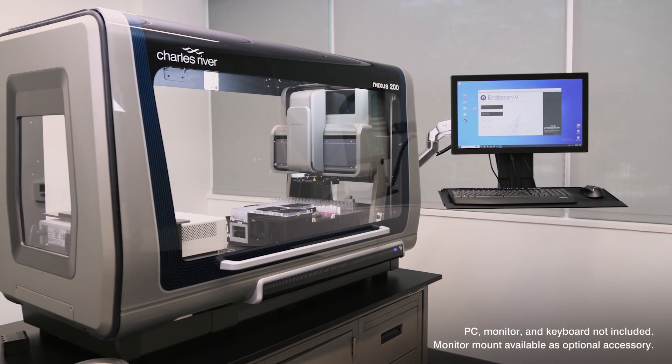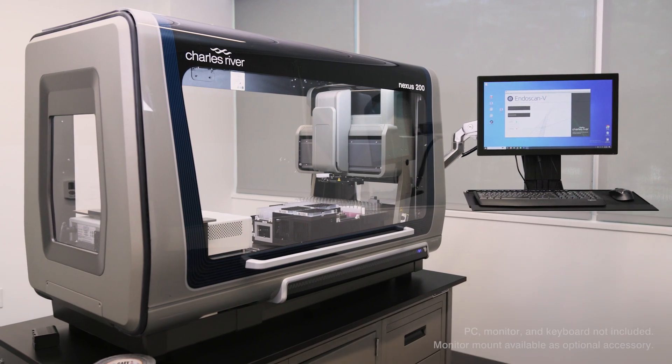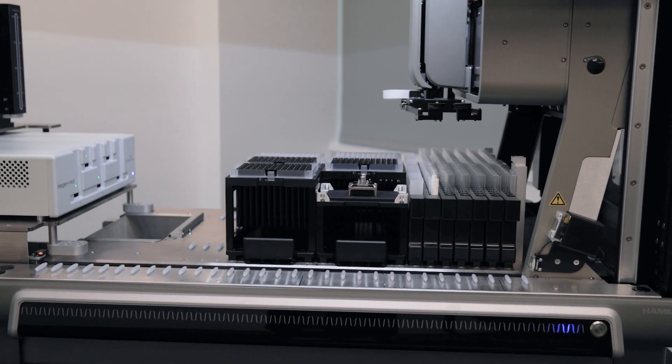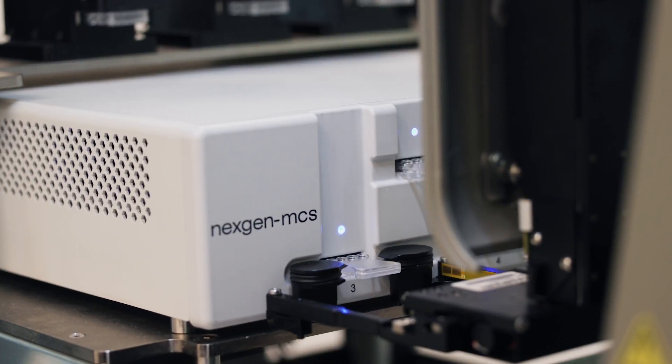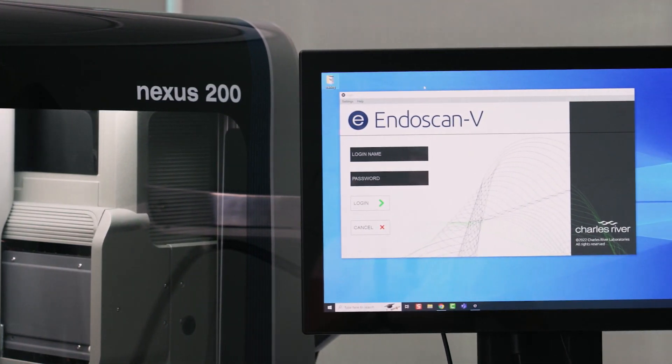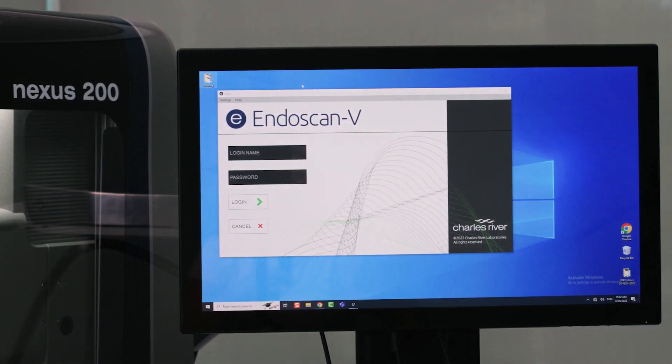The Nexus 200 system was purposefully designed to automate all the critical steps for testing samples for endotoxins through automation, reducing the risk of repetitive strain injuries, decreasing human intervention, and ultimately reducing lab investigations.